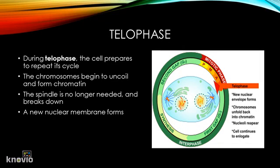Telophase. During telophase, the cell structure is reconstructed and the cell prepares to repeat its cycle. The chromosomes begin to uncoil and form chromatin again. The spindle is no longer needed and breaks down, and a new nuclear membrane forms — earlier, during prophase, the nuclear membrane had broken down.